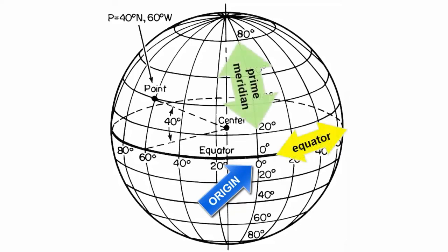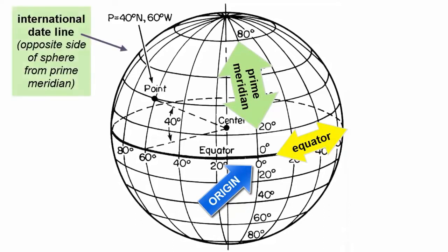The vertical circle is called the prime meridian on the half that runs through Greenwich, England, and the international dateline on the other half that runs through the center of the Pacific Ocean.